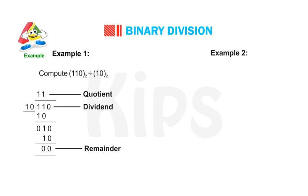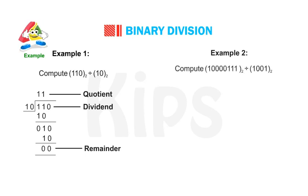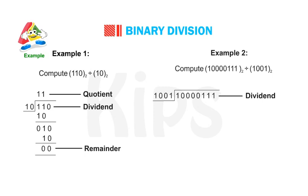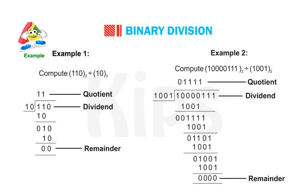Example 2: Compute binary 10000011 divided by binary 1001. Division of binary 10000011 by binary 1001 gives us quotient 11110 and remainder 000.